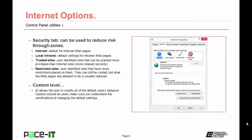The Security tab allows you to reduce risk through the use of zones: Internet (default for web pages); Local Intranet (default for local network); Trusted Sites (user-identified sites granted more privileges — more relaxed security); and Restricted Sites (user-identified sites with more restrictions, still visitable but greatly reduced in what pages can do). You can set custom levels for each zone. Internet Explorer allows modification of all default behavior — use caution and understand the ramifications before changing defaults.